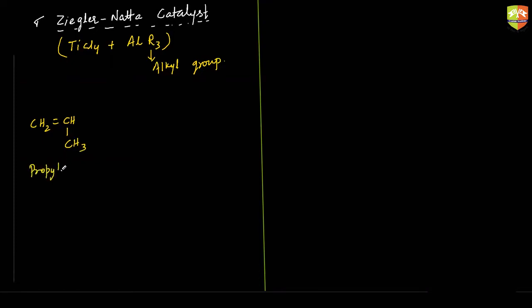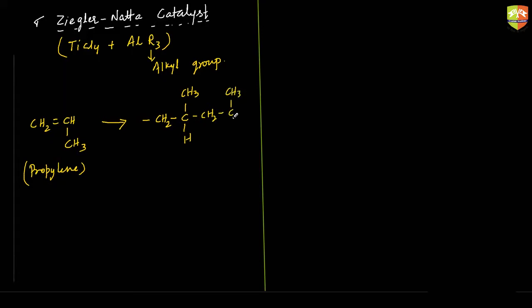This is propylene. And the polymerization of this gives the structure: CH2, CH3, H, CH2, CH3, H — and like this it goes. Do we have any chiral carbon in this molecule? This is polypropylene. Do we have any chiral carbon in this?